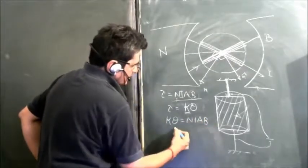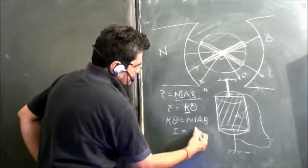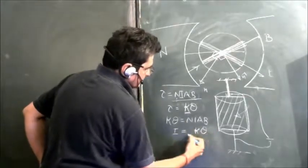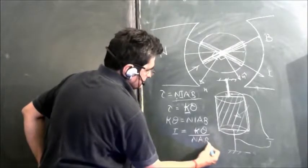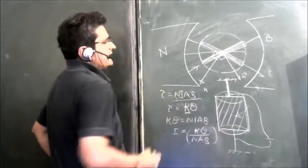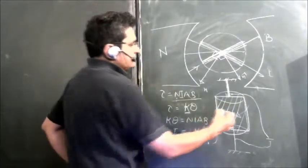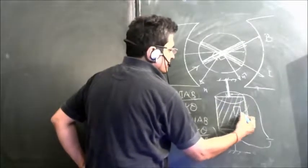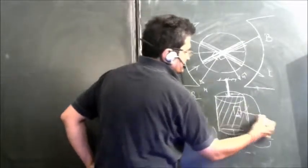So we write k theta equals N I A B, and by this relationship we can find the value of current. We can find the value of current as I equals k theta divided by N A B.